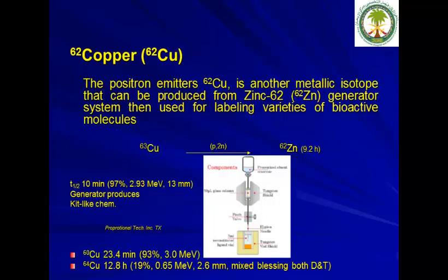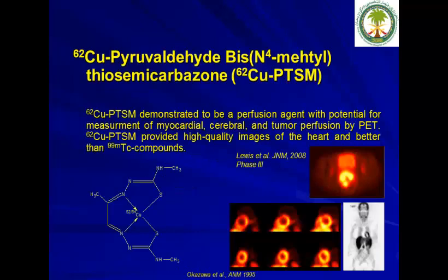Copper-62 and other copper radioisotopes such as copper-60 and copper-64 have similar characteristics and have been used for radiolabelling a variety of compounds. One of them is PTSM, used for cardiac imaging, and it has been shown to be better than technetium-99 compounds.